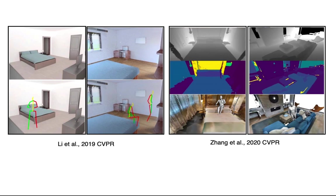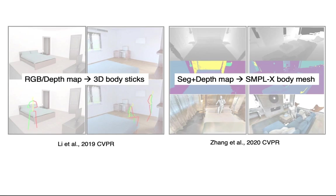Previous works mostly use RGB image, depth map, or semantic maps as scene representation, which loses geometry information. The performance is unstable, with a large perceptual gap to the real captured data. They directly generate 3D body sticks or simple x-body mesh without explicitly modeling human-scene interactions.